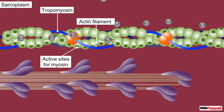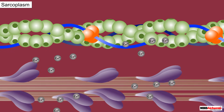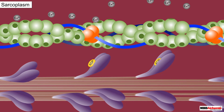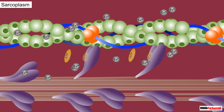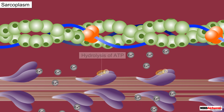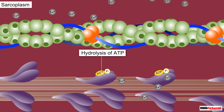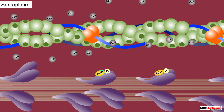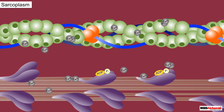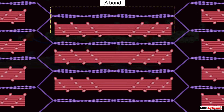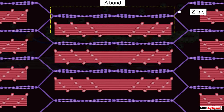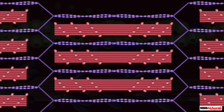With the active sites of actin now exposed, the myosin heads begin binding to actin, forming a crossbridge. The energy needed for crossbridge formation comes from the hydrolysis of ATP attached to the myosin into ADP and inorganic phosphate. The attached actin filaments are therefore pulled towards the center of the A band, bringing the Z lines closer to each other.